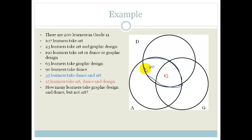Now let's see what other information we've got. We also have that 23 learners take art and graphic design. Therefore we know that this bit here should all add up to 23, but if this is 15, then 23 minus 15 is equal to 8.